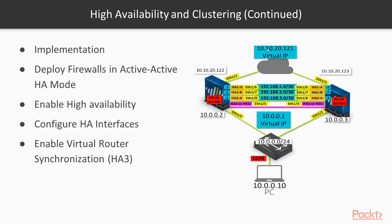So .1 will be my shared virtual IP between the two units. My destination will point towards this address, but either PA01 or PA02 can forward. Same with my internal network — I'll point my users to go to 10.0.0.1. Because we're doing Active-Active, either PA01 can own the session or PA02 can own the session. The active forwarder will be either .2 or .3, and that's how we load balance traffic across the two units.